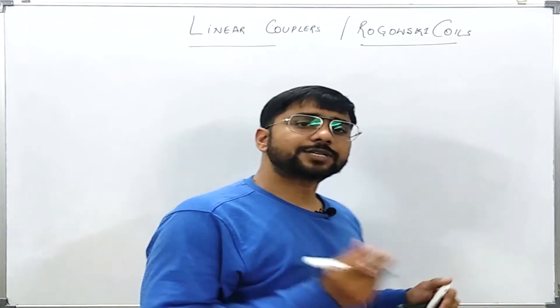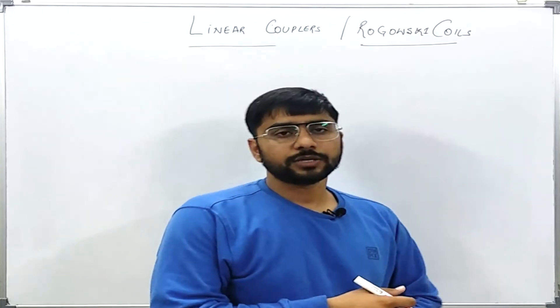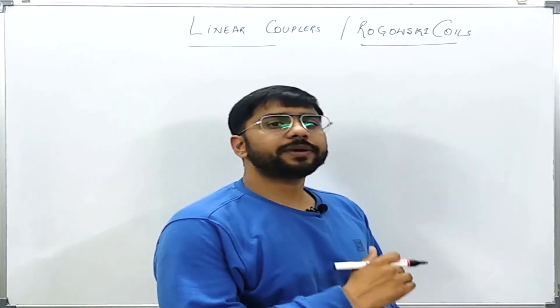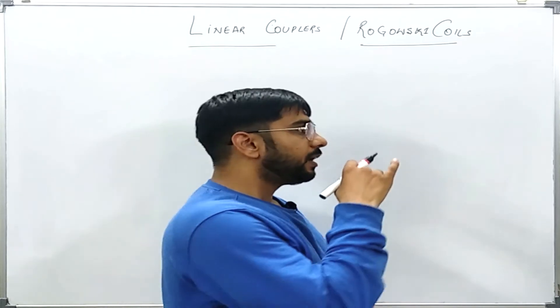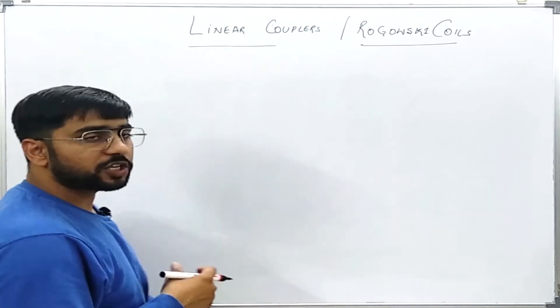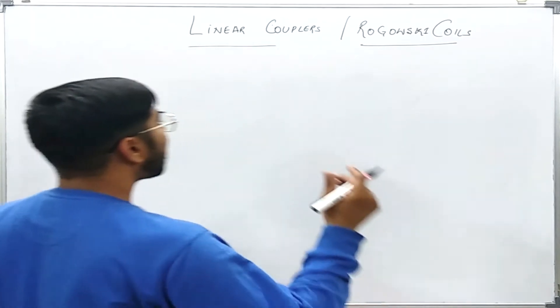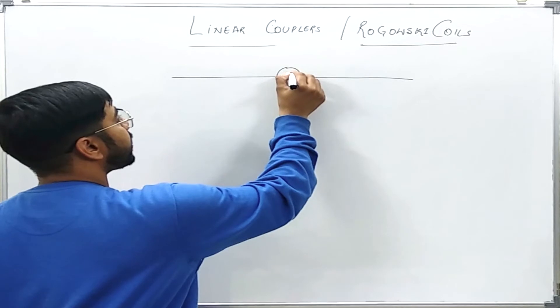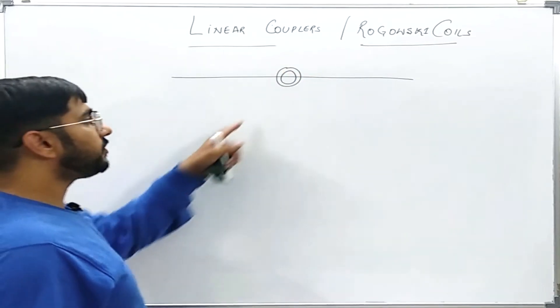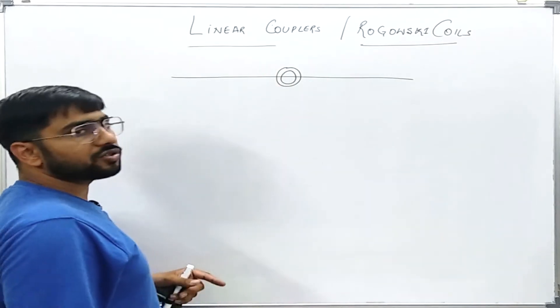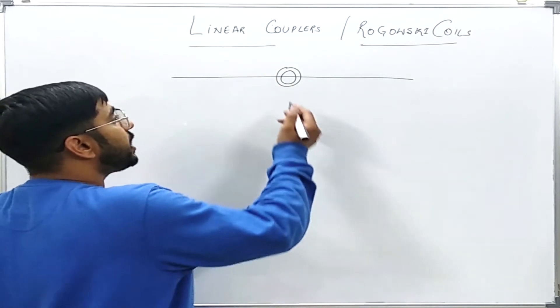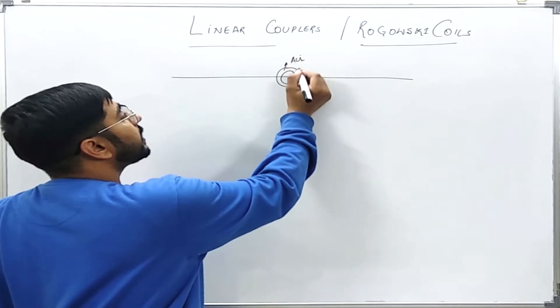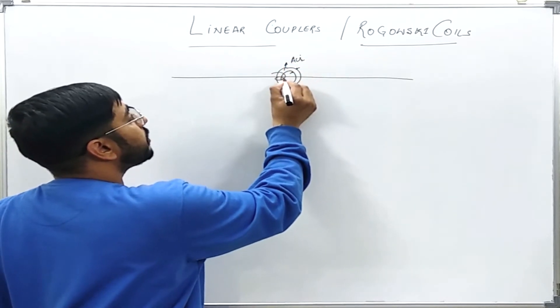We have seen that this saturation phenomena is because of the iron core which we have used. If I somehow remove this iron core and put a medium which is having linear behavior all over the region of the H or the current, we will have the response which is linear everywhere. What I will do? Let us say this is the primary conductor and over it this is the magnetic core. Instead of this magnetic core if I use some material which is not magnetic in nature or let us say I don't use any material of magnetic nature, I just have this air only and let us say this is made up of some plastic only and over it I wound the secondary.